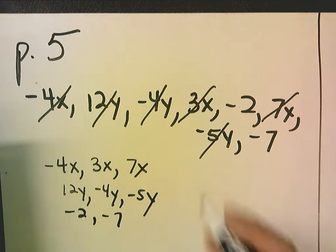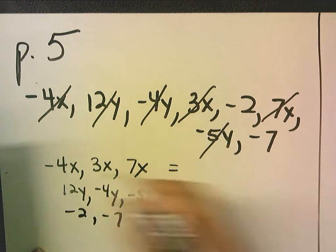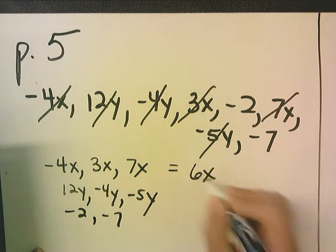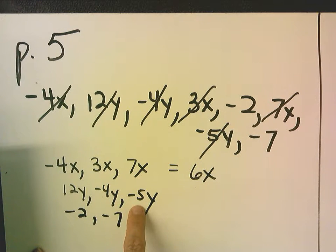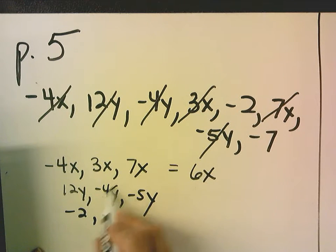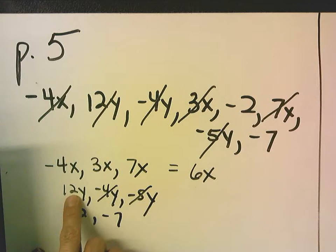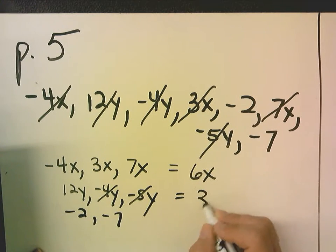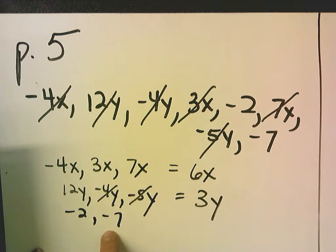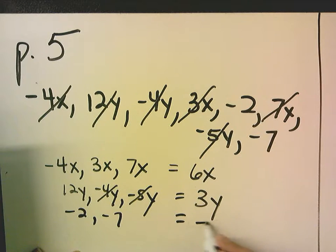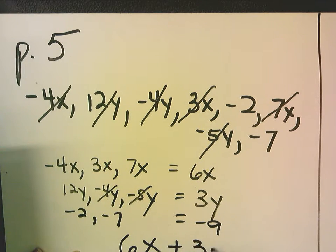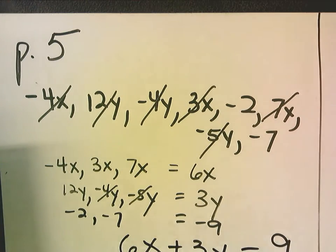So now, 7x plus 3x is 10x, 10x minus 4x is 6x. Negative 4y and negative 5y is negative 9y, plus 12y would be 3y. Negative 2 plus negative 7 is negative 9. So I get 6x plus 3y minus 9.